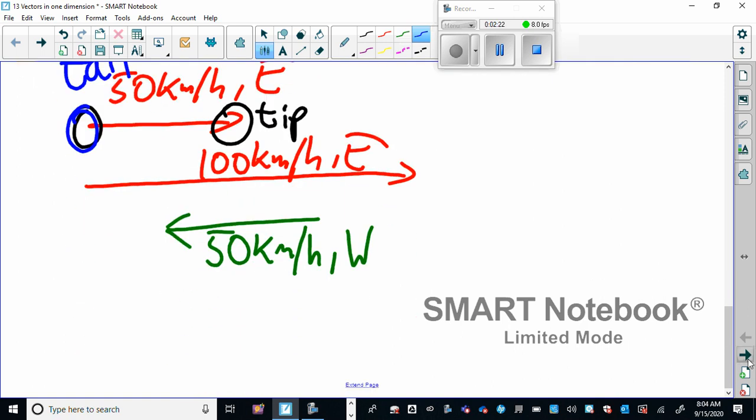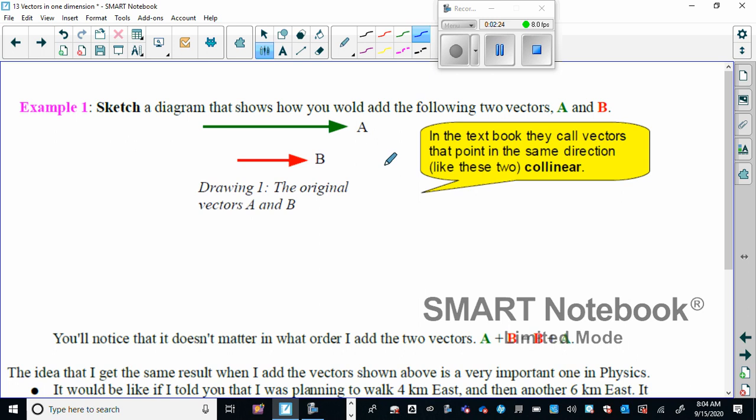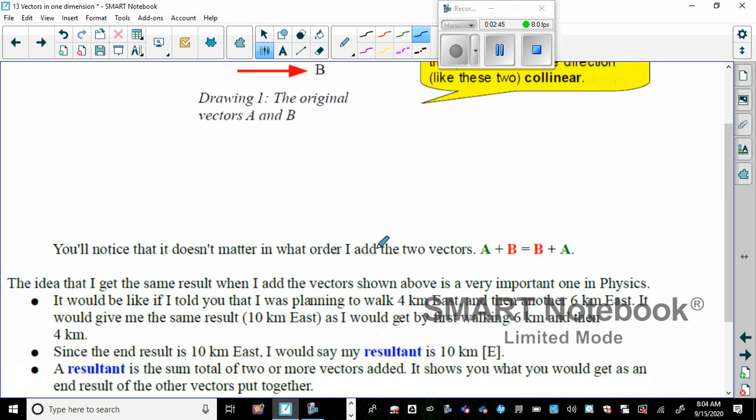Okay, let's go on to page two. Sketch a diagram that shows how you would add the following vectors A and B. So you're going to take the vectors and place them tip to tail. And then the resultant vector, in other words what happens when you add these vectors, you place another vector which is tail to tail, tip to tip, which may not make sense to you right now but when I do an example it should make sense.